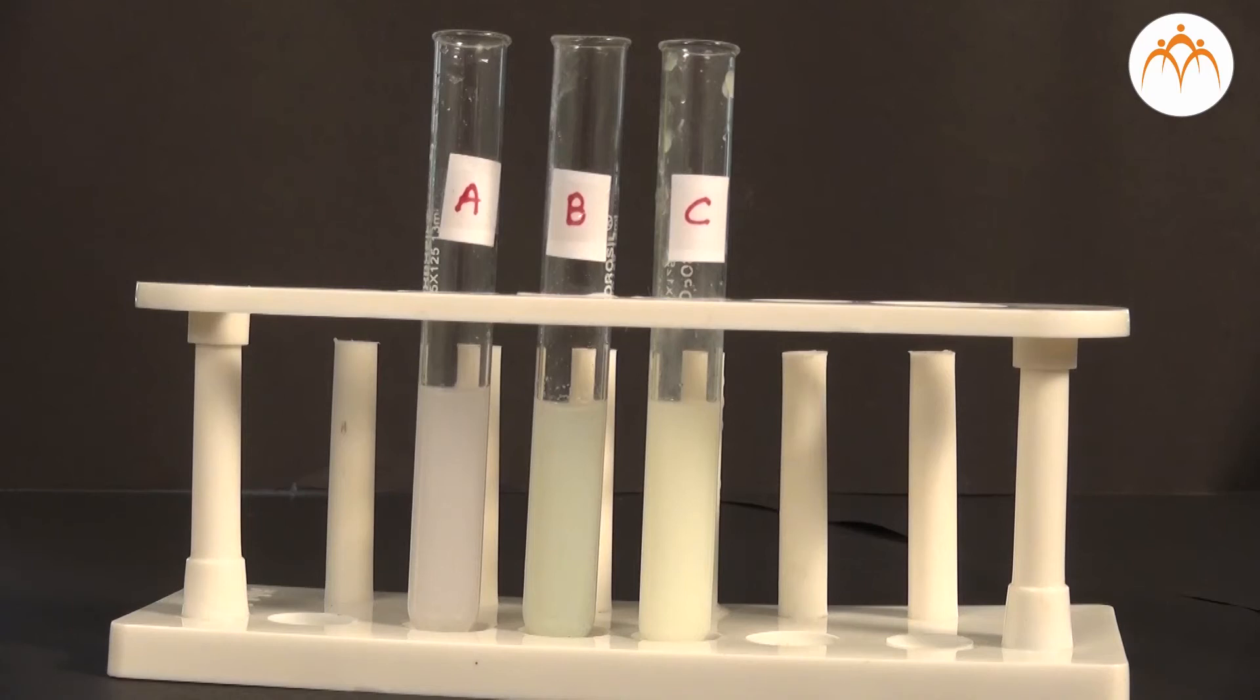The color indicates which ion exists in a particular solution. White color indicates that there must be chloride. Light yellow color indicates bromide and dark yellow color indicates iodide in the solution.